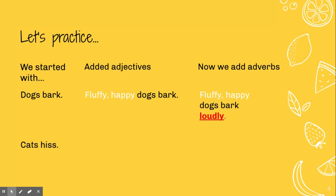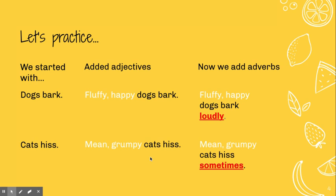I don't know, they can bark quietly, can they? So let's try 'cats hiss.' Yesterday we added adjectives to say 'mean grumpy cats hiss.' What kind of adverb can we add to this? Well, 'mean grumpy cats hiss sometimes' — that tells us when. Not all the time, not every second of the day, but sometimes they do.